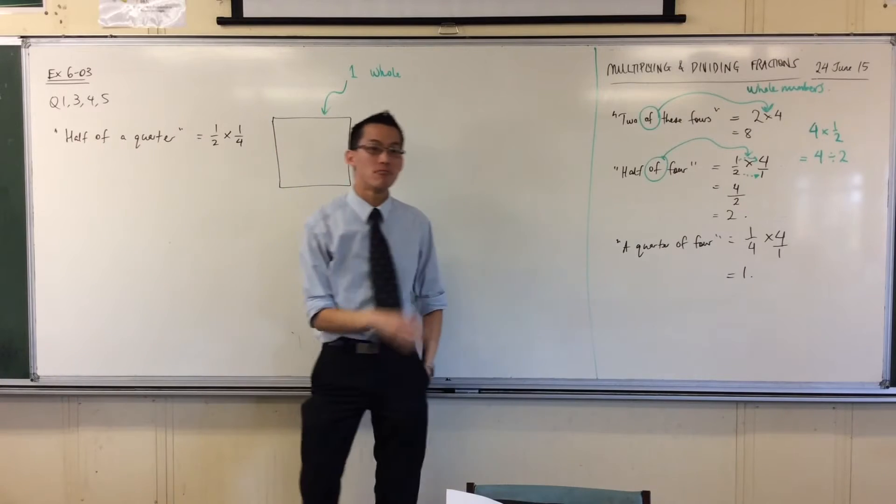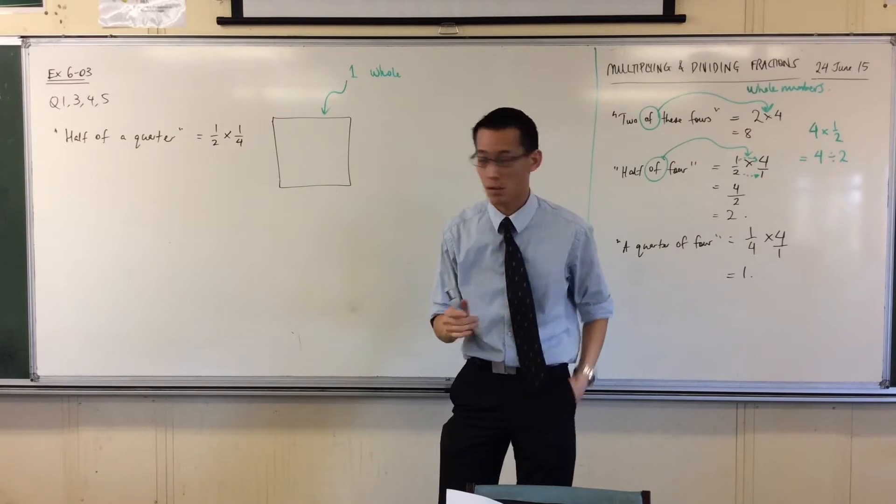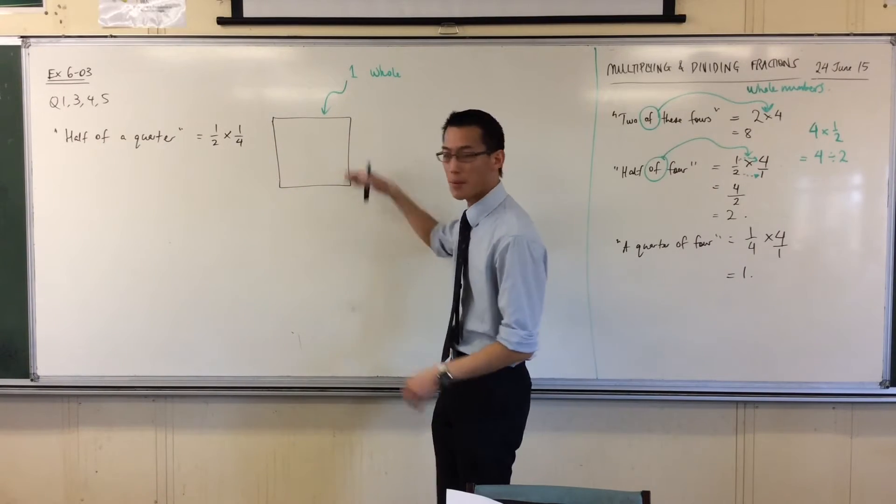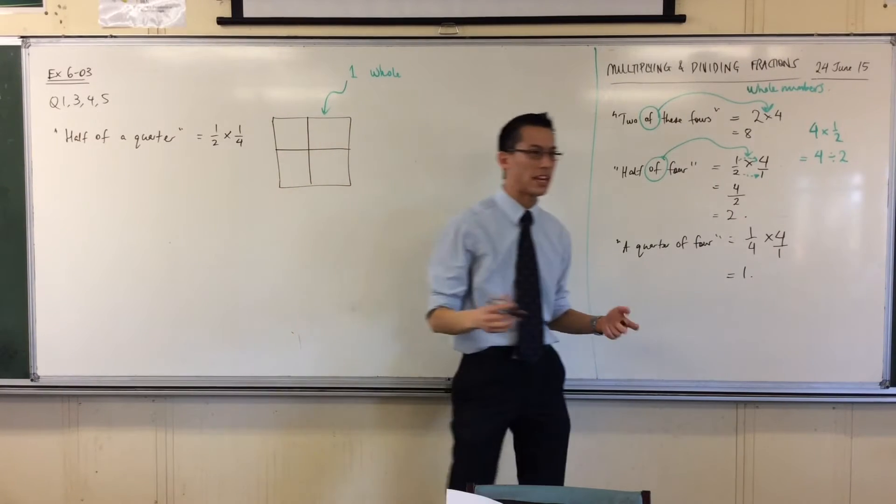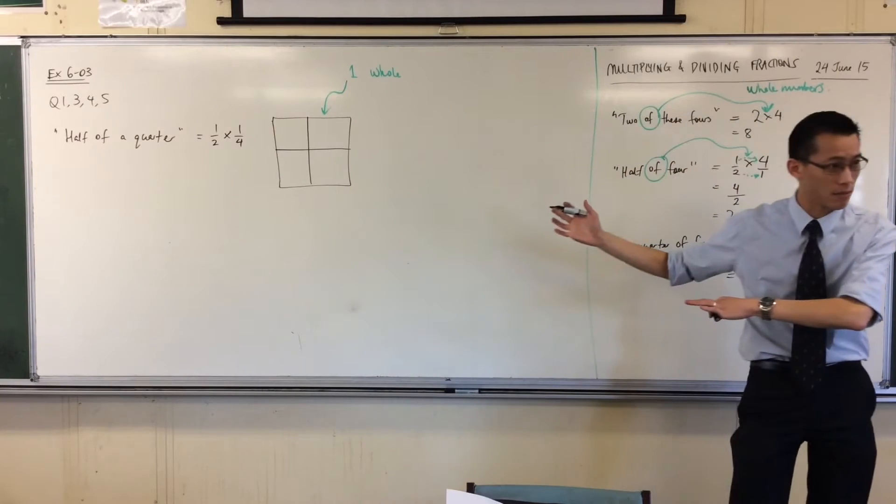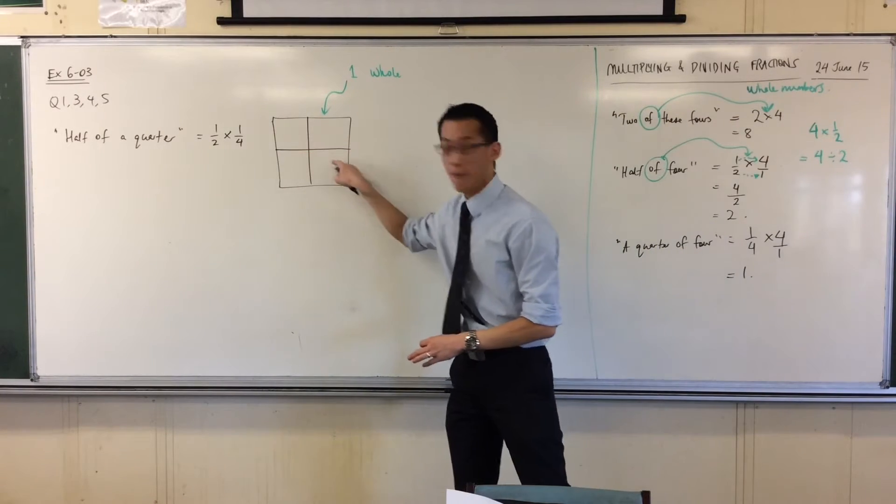I can divide this up in order to get some fractions. If I want half of a quarter, let's do the quarters first. So I'm going to divide this up into four. I guess I'll do it like this. They're quarters. I mean, it's not perfect, but you get the idea, right? So I've got one, two, three, four quarters.